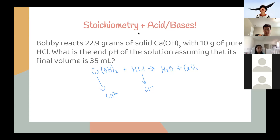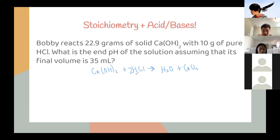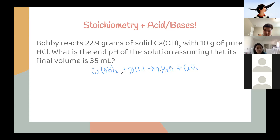To balance the equation, chlorine is out of place, so we put a coefficient of 2 in front of HCl. That also fixes the hydrogen imbalance — there are four hydrogens on the left side, so we put a 2 in front of H₂O, which also fixes the oxygen imbalance. The balanced equation is: Ca(OH)₂ + 2HCl → 2H₂O + CaCl₂. From here, you convert the given masses to moles using molar masses of Ca(OH)₂ and HCl (HCl molar mass ≈ 36.46 g/mol), then solve as a limiting reactant problem.